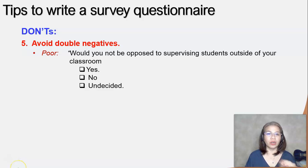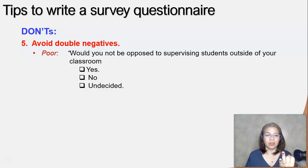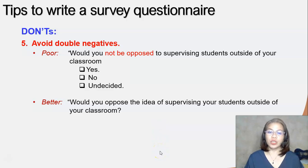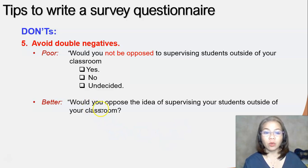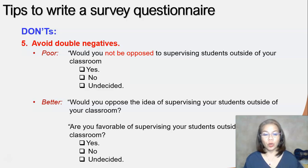Avoid double negatives. For example: 'Would you not be opposed to supervising students outside your classroom? Yes / No / Undecided.' The double negatives here are 'not' and 'opposed,' making it confusing to answer. Corrected: 'Would you oppose the idea of supervising your students outside your classroom?' Or better yet, state it positively: 'Are you favorable of supervising your students outside of your classroom? Yes / No / Undecided.'